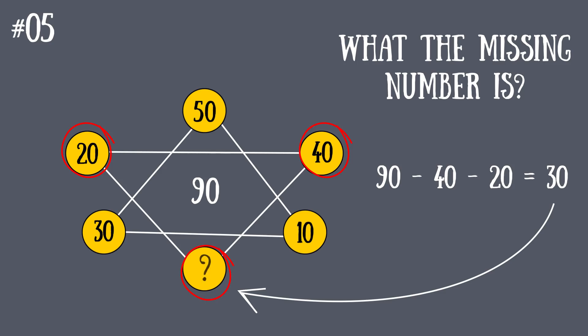So 90 minus 40 minus 20 is 30. Did you get it right? Tell us in the comments below.